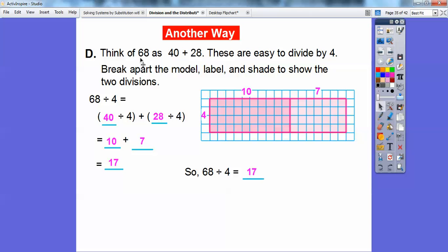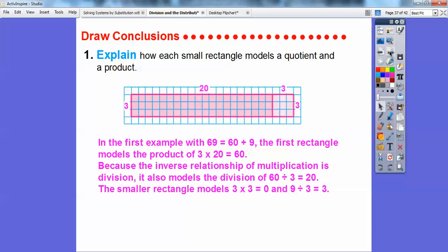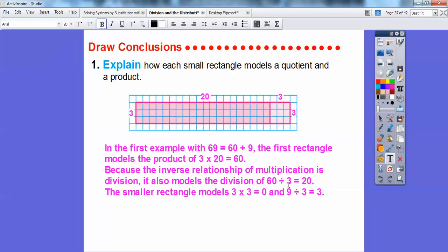We can break this number up into the sum of smaller numbers that are easily divided by this number right here. So explain how each small rectangle models a quotient and a product. In that first example with 69 equaling 60 plus 9, the first rectangle modeled the product of 3 times 20. 3 times 20 gave me the 60, and then this model represented 3 times 3, which gave me the 9. And so because the inverse relationship of multiplication is division, then what we could do is it also models the division of 60 divided by 3 is 20.